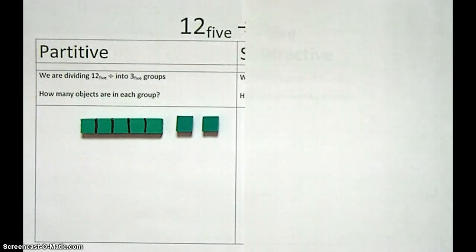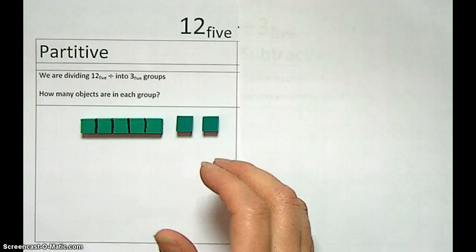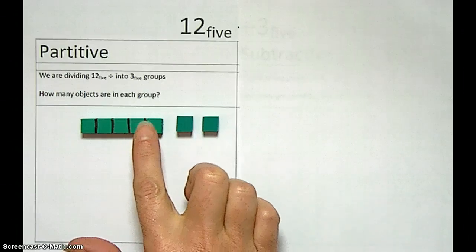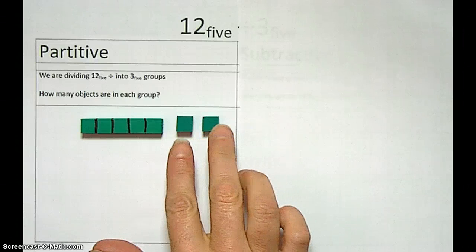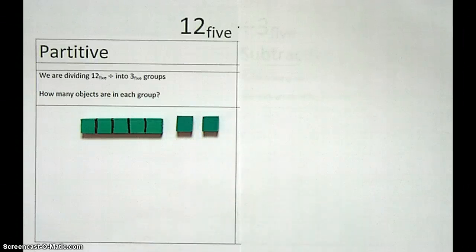Okay, so first I'm going to do partitive, obviously, which is why I'm covering up subtractive. So here we've got 1, 2, base 5, and we want to break it into 3 groups. And 3, base 5 is the same as 3, anything else. So we're going to go ahead and make our 3 groups.